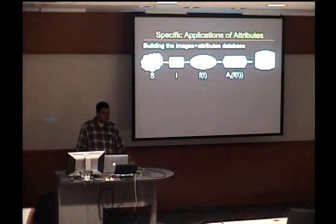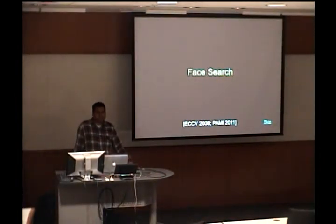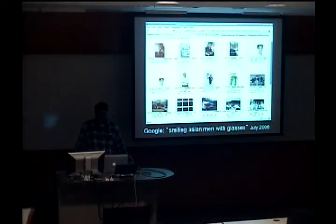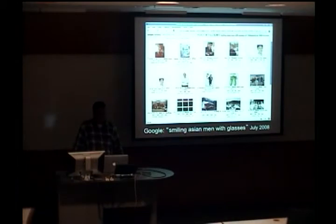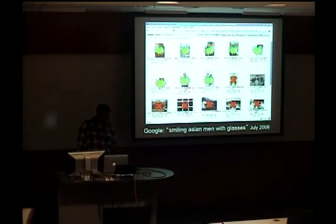I've talked about how you can build a database of images and attributes. Now let's look at different applications — in particular the composition function. The first application is searching for faces, work presented at ECCV 2008. If you search Google Images for 'smiling Asian men with glasses,' the results are not very good — roughly half are not relevant, and the other half are from stock photo websites, which have limited collections. Obviously this can't scale to the trillions of images on the web.